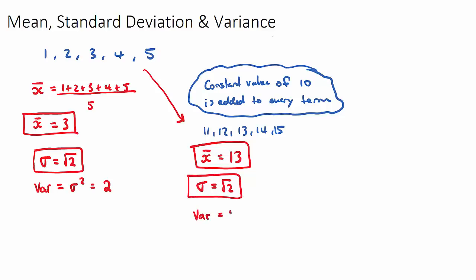And therefore the variance also won't change. The variance will just be 2. So that's the first rule of thumb there. If a constant is added, the mean is added by the constant, but the standard deviation, the variance, which is the spread, that does not change.